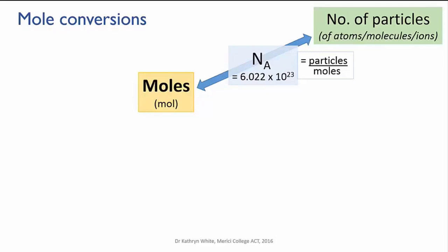And the formula that relates these three quantities, Avogadro's constant, the number of particles you have and the number of moles you have, is here. Na equals particles divided by the number of moles. We'll do some examples using this in a few minutes.